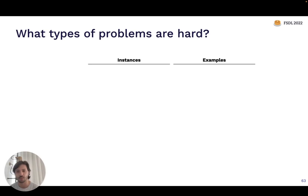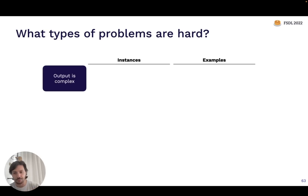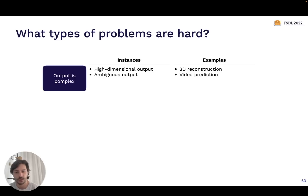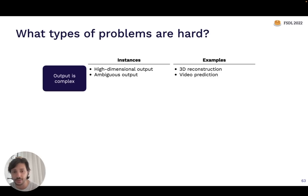Problems requiring the system to generalize well to data it's never seen before are also difficult — when the system needs to do something like reasoning, planning, or understanding causality. Dealing with edge cases in self-driving cars is a very difficult challenge. Control problems in self-driving cars have used more traditional methods for longer, whereas the computer vision and perception part adopted machine learning pretty early. And small data still presents a lot of challenges, especially in deep learning. So how should you assess whether your ML project is feasible? The first question: do we really need to solve this problem with ML at all?